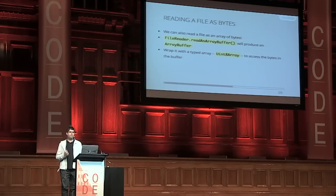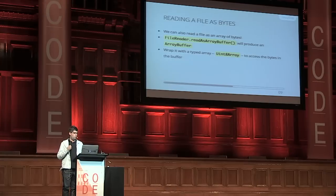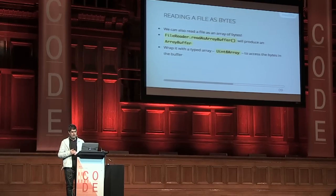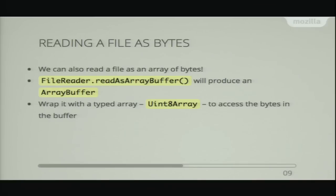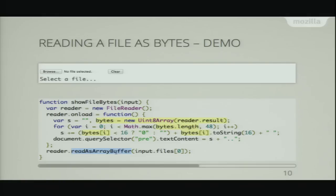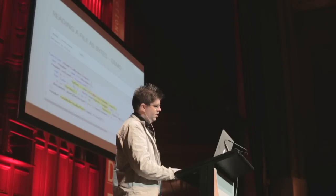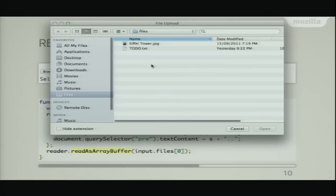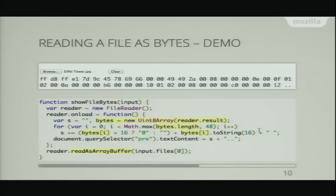Probably the most interesting thing is getting the FileReader to provide the file as an array of bytes. There's a third method called readAsArrayBuffer, which gives you an ArrayBuffer representing the binary data. We can wrap that with a typed array — in this case Uint8Array, an unsigned 8-bit integer, so a byte array — and then access individual bytes. We call readAsArrayBuffer, take reader.result as an ArrayBuffer, wrap it in a Uint8Array called bytes, and use it like any array-like object with .length and normal array indexing. There we go — we can see the start of the JPEG.